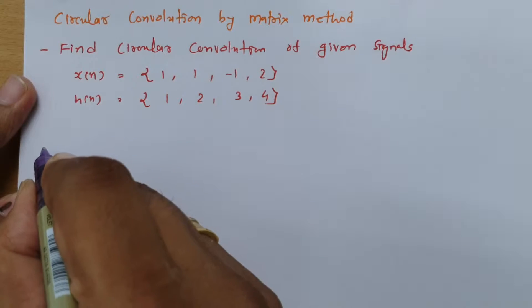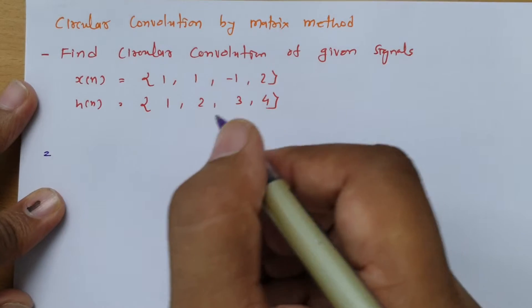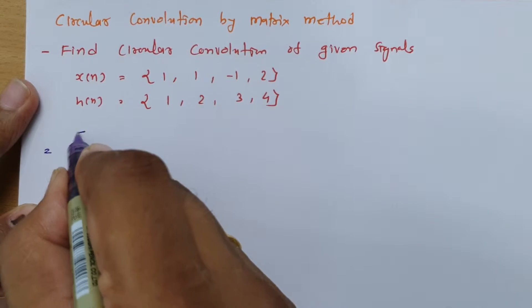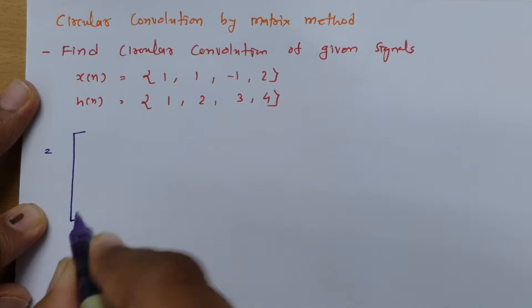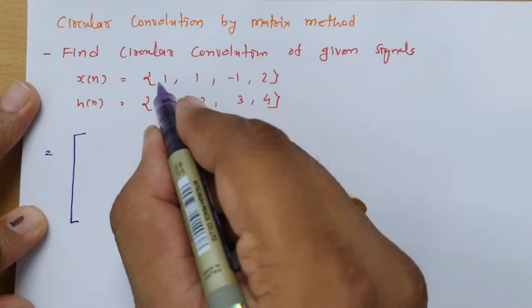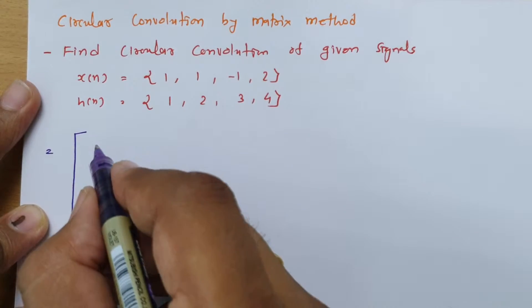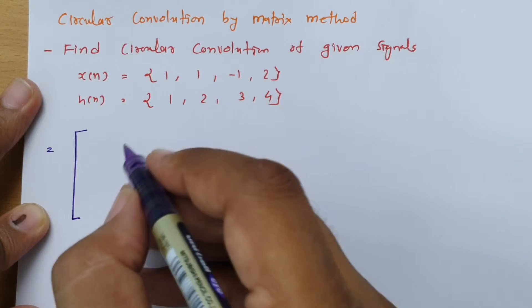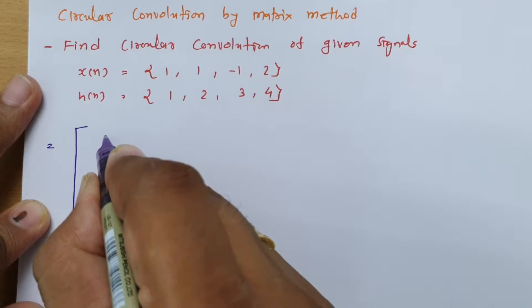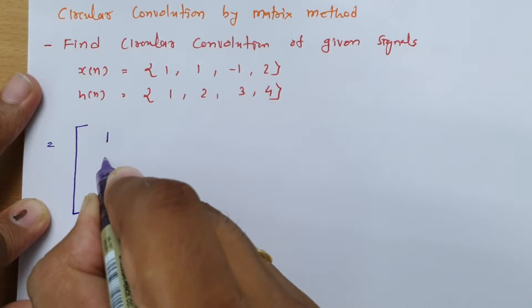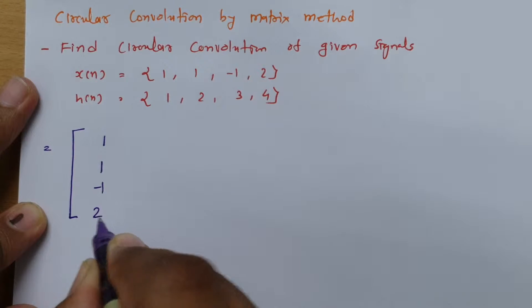So first, by using x of n, we need to make a matrix. I will be writing the first column using x of n. So the values are 1, 1, minus 1, and 2.